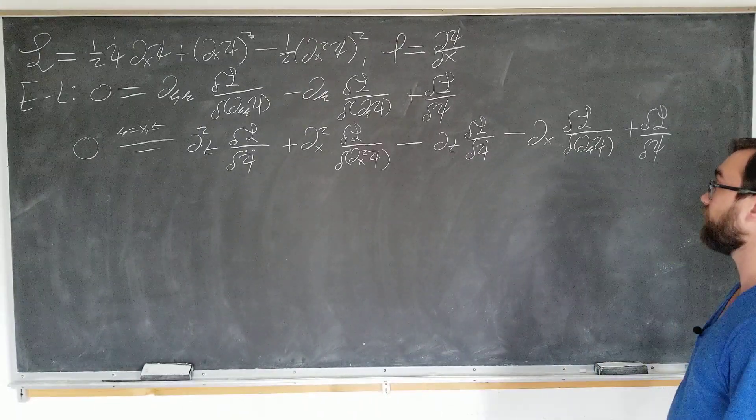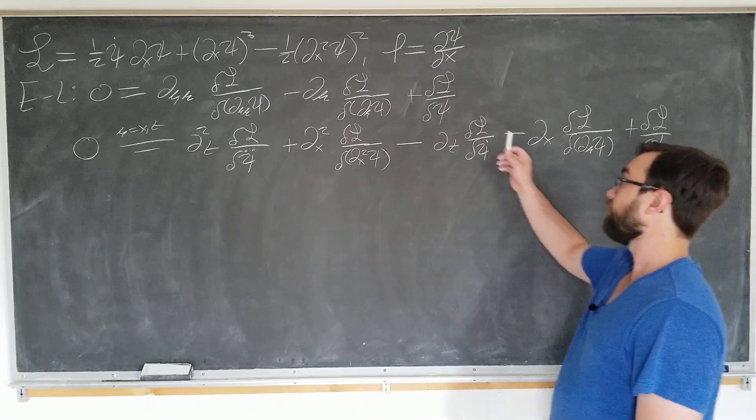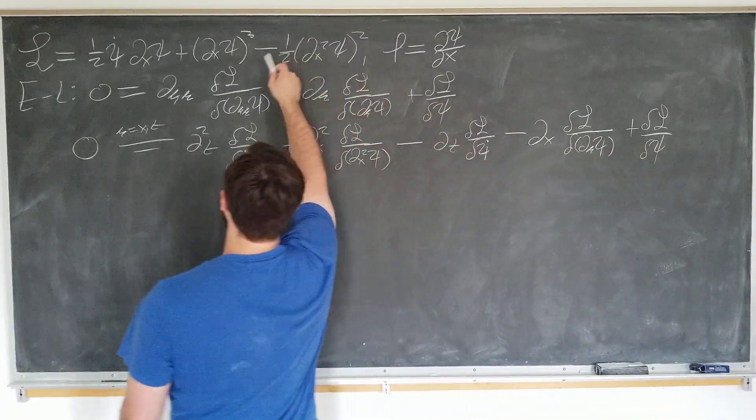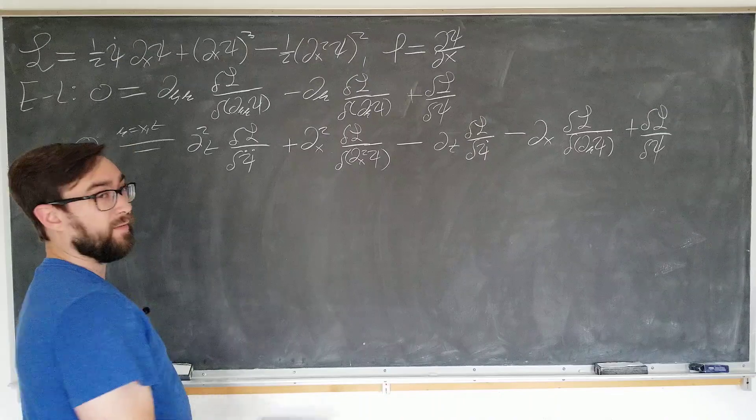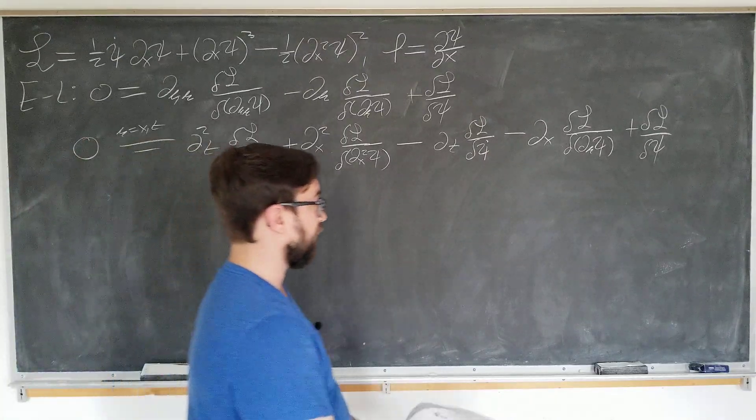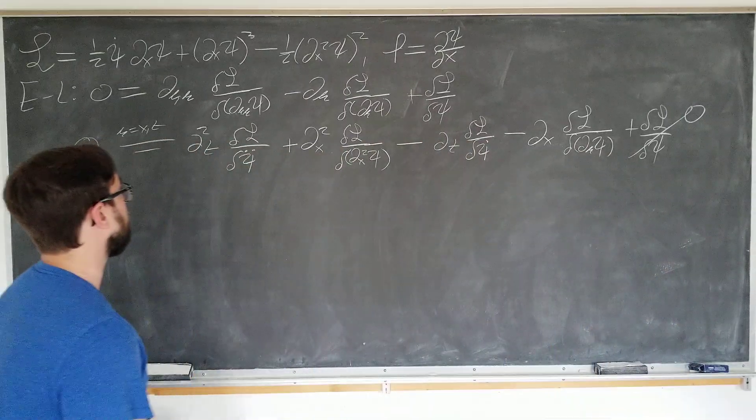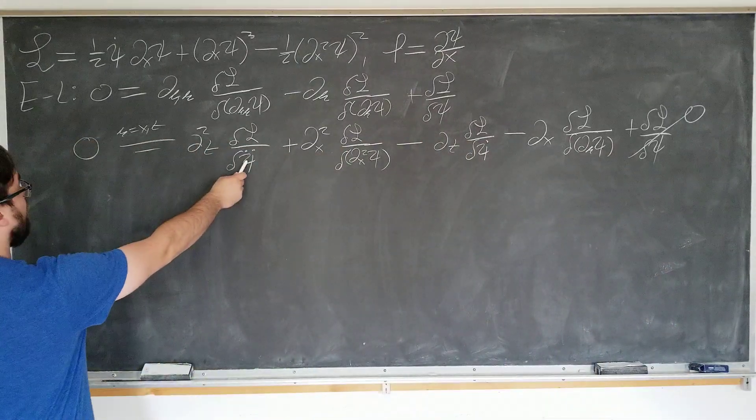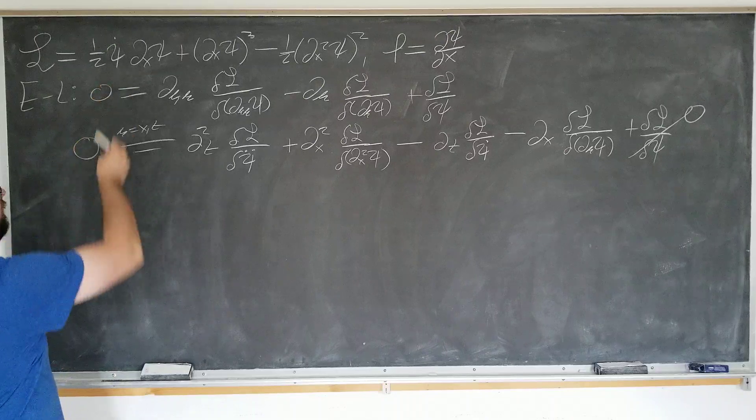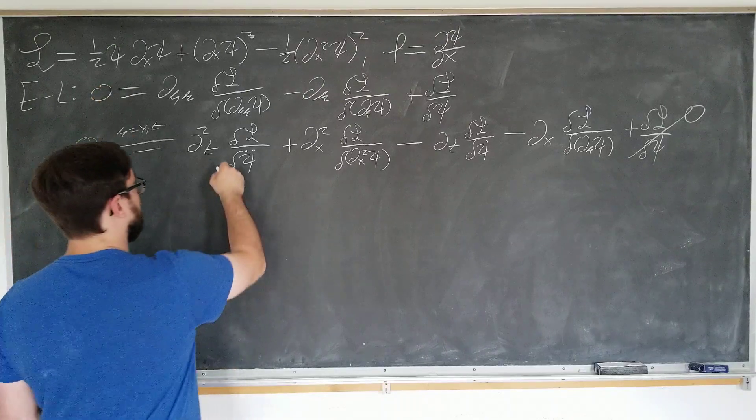All right. So let's note which terms are definitely 0. Well, do you see any size by themselves up here? I'm really not seeing any size by themselves. So that means that this term is 0. And are you seeing any psi double dots? Well, I see dot. I don't see phi double dot. So this term is 0.